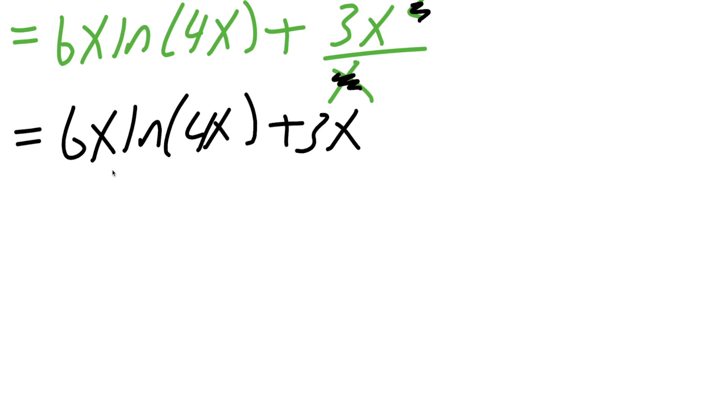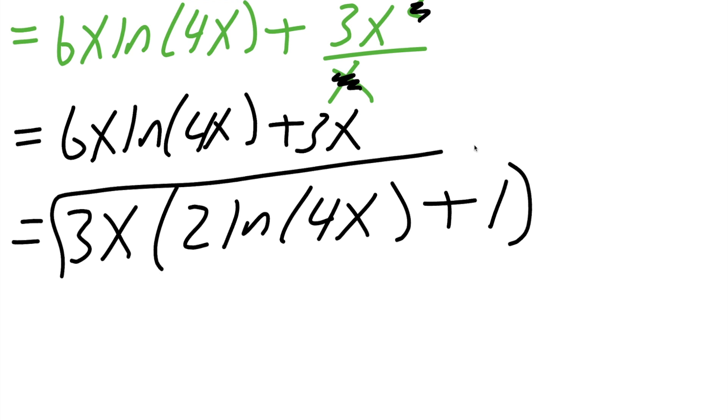We get 6x·ln(4x) plus 3x. If you want to factor out a 3x, you can because this is 6x and this is 3x. You'll get 3x(2·ln(4x) plus 1). This is our final answer.